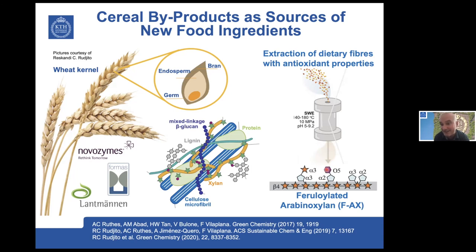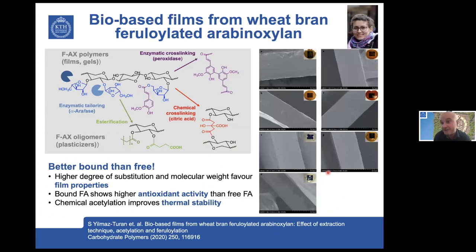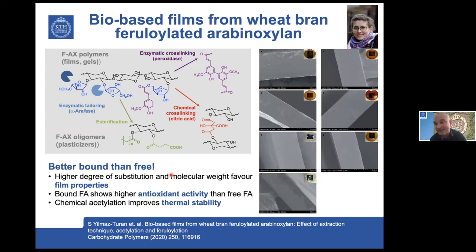Most importantly, we kept these phenolic acids covalently bound to the hemicellulose structure. Keeping this phenolic acid gives these hemicelluloses antioxidant properties that are quite important in different applications. We wanted to see if we could use these feruloylated arabinoxylans to make films that could be used as barriers — combining not only the oxygen barrier properties, but also the antioxidant properties of the ferulic acid covalently bound. We proved that ferulic acid in covalent form provided higher antioxidant activity than free ferulic acid added to the film.